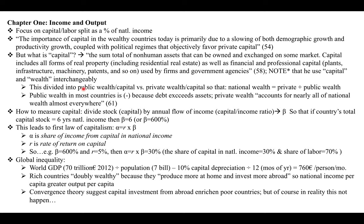Capital is divided into public wealth versus private wealth, so that national wealth equals private plus public wealth. Importantly, he notes that public wealth in most countries is negative because the debt exceeds the assets. Private wealth commands almost all of the percentage of national income, whereas public wealth is a very small percentage, and in some cases is even negative. Private wealth accounts for nearly all of national wealth almost everywhere.